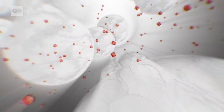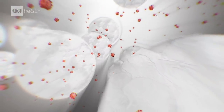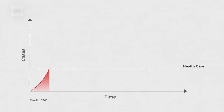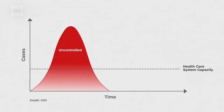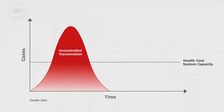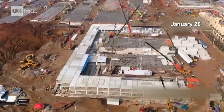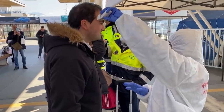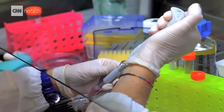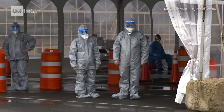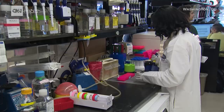When a virus spreads, the number of people who are infected can quickly rise. This sharp increase can overload the healthcare system with sick patients who need intensive care. One solution is to increase the healthcare system's capacity — whether that's by building hospitals, training additional doctors, or buying more equipment. But that takes time and resources, which countries don't always have during an epidemic.